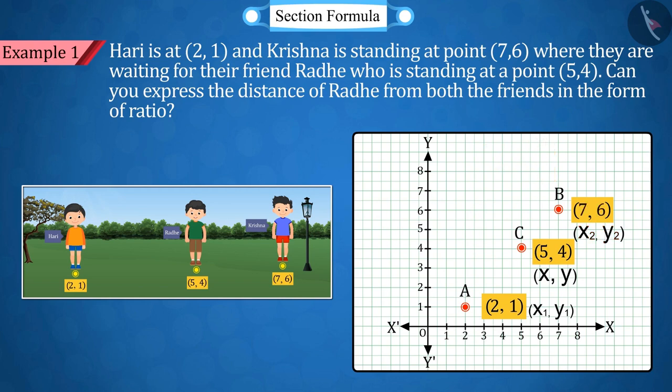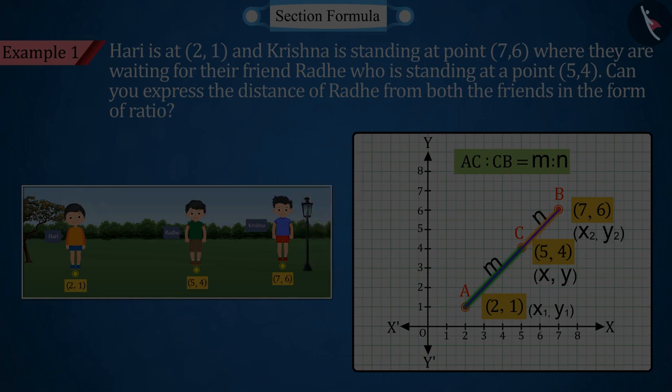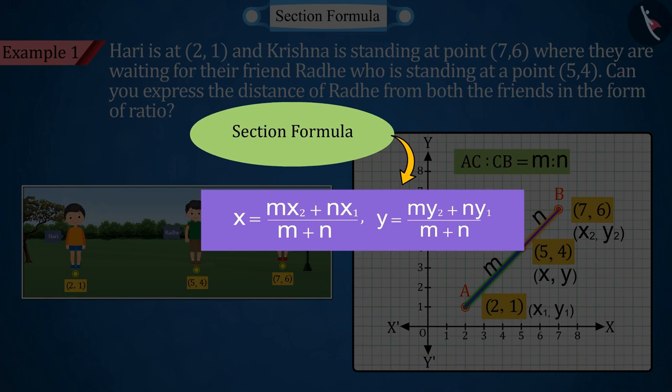By joining these three points together, we get a line segment where we have to find the value of AC ratio CB. Suppose here the ratio of AC and CB is M ratio N. Can you tell us what we need to do for this? Well done, it is correct that section formula will be used here.